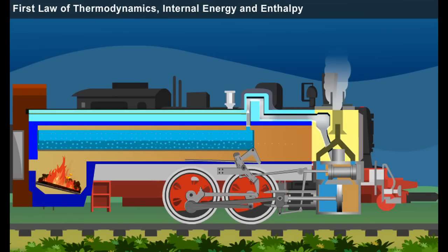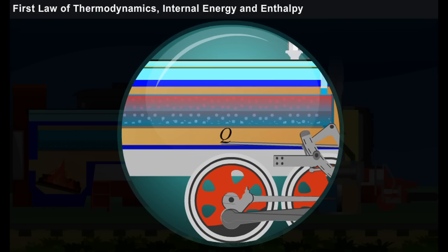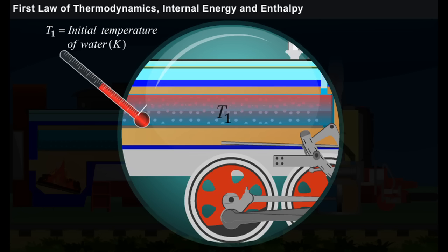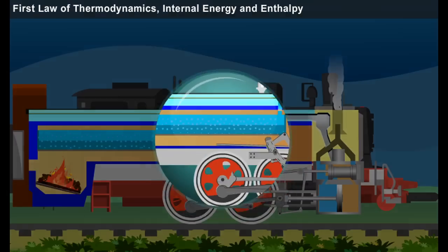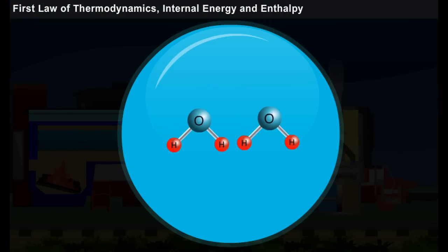And this heat energy is used to boil the water. Let us consider the initial temperature of water as T1. If we see at microscopic level, the water molecules will have rotational, vibrational, and translational movements.